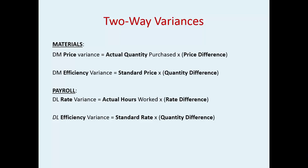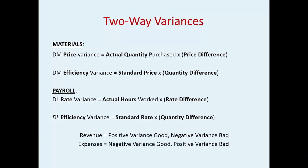These are typical two-way direct materials and direct labor variances, and how you calculate the difference between a price or rate variance and the efficiency variance. A key to remember: for revenue, a positive variance is good and a negative is bad. For an expense, a negative variance is good and a positive is bad — because you want your revenue higher and your expenses lower.